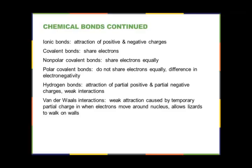Covalent bonds involve sharing electrons. When atoms are not close to having a full outer shell or an empty one, they often share electrons with a neighboring atom. When they share equally, we call it a non-polar covalent bond. When there's a difference in electronegativity and electrons aren't shared equally, we call it a polar covalent bond. With a polar covalent bond, electrons are not equally distributed, resulting in partial positive and negative charges. When those partial charges attract each other, we refer to it as a hydrogen bond — a weak interaction that explains many properties of water.